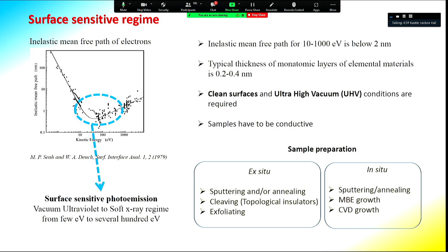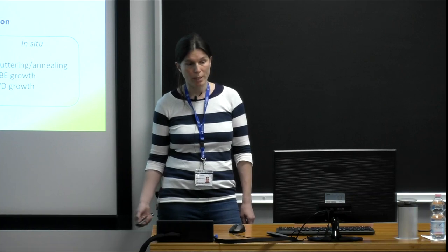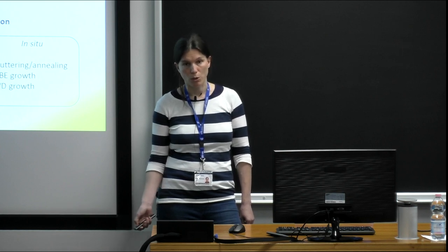Photoemission is typically performed in the energy range of 10 to 1000 electron volts — the so-called surface-sensitive regime. The inelastic mean free path of outgoing electrons is not more than 2 nanometers, meaning you probe at most 10 atomic layers from the surface. At 5 to 100 electron volts, you probe only 1 to 2 monatomic layers. This surface sensitivity requires very clean surfaces and ultra-high vacuum conditions so that the sample surface remains measurable without being contaminated.